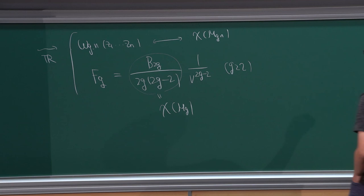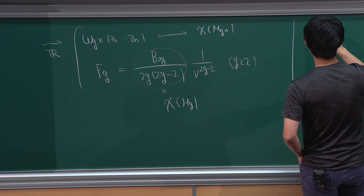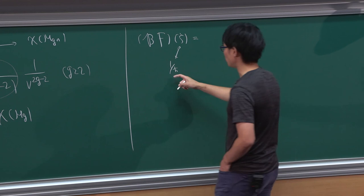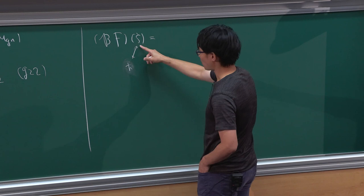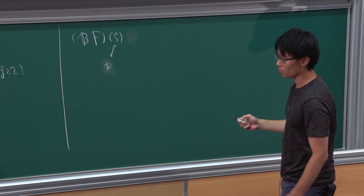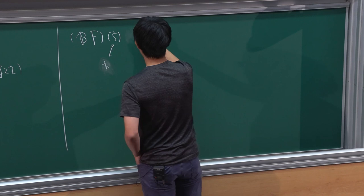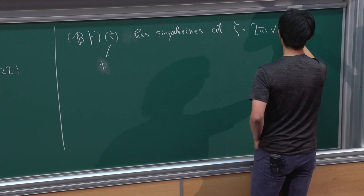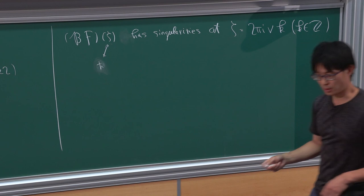From this explicit expression, you can analyze the Borel singularities. In this case, you can see that the Borel transform of our free energy on the zeta-plane — where zeta is the Borel-Laplace dual variable to 1/h-bar — has singular points at zeta = 2πi·nu·k, where k runs over all integers. So you have some periodic singularities on the Borel plane.